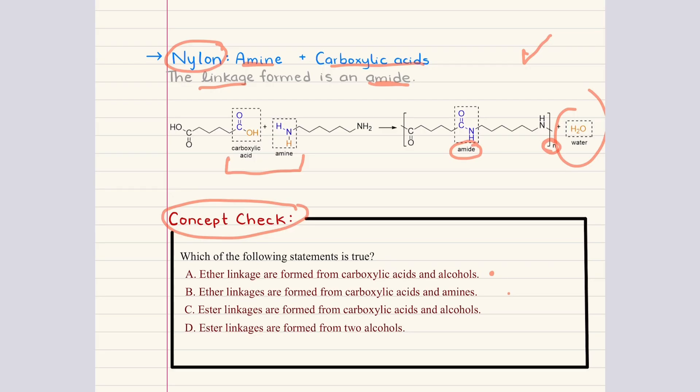A says ether linkages are formed from carboxylic acids and alcohols. B says ether linkages are formed from carboxylic acids and amines. C says ester linkages are formed from carboxylic acids and alcohols. And D says ester linkages are formed from two alcohols. So to solve this, we go back to the patterns we just learned. Ester linkages form when a carboxylic acid reacts with an alcohol and it releases water in this condensation reaction. Ether linkages on the other hand form from two alcohols. So the only statement that matches a correct functional group pairing is going to be answer choice C.